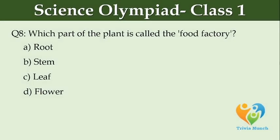Which part of the plant is called the food factory? Option A: Root. Option B: Stem. Option C: Leaf. Option D: Flower.